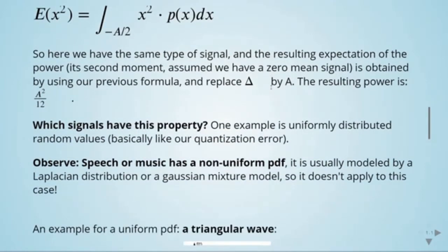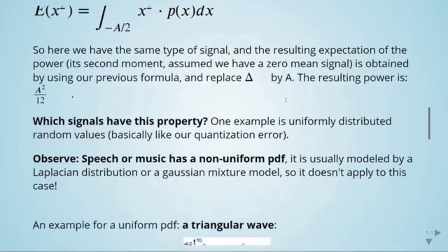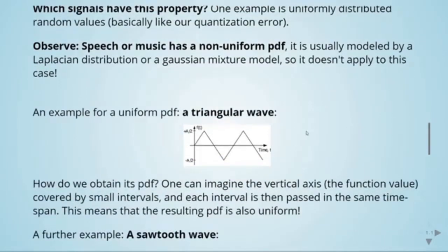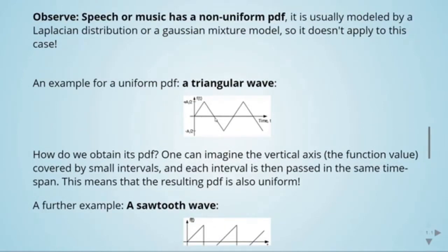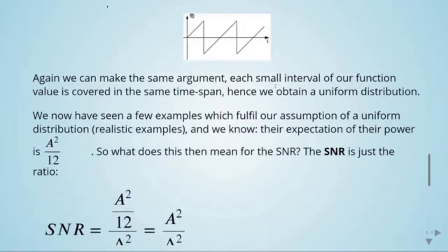What kinds of signals have this uniform distribution property? Uniformly distributed random values have this property, similar to our quantization error. However, it's important to note that speech, music, and audio have a non-uniform PDF — they are usually modeled by a Laplacian distribution or a Gaussian mixture model, so this formula doesn't apply to them. Other signals with a uniform PDF include the triangular wave and the sawtooth wave, because each function value interval is passed in the same time span, resulting in a uniform PDF. For uniform distributions, the expectation of power is a² divided by 12.